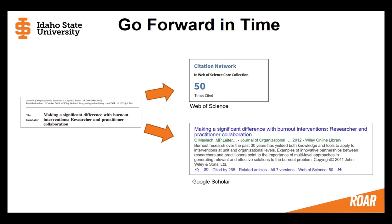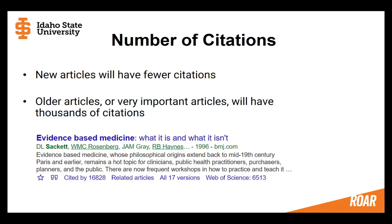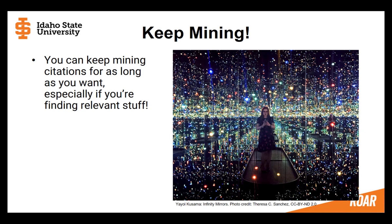If you're starting with a pretty recent article—something published in the last year, for example—this number is going to be pretty low, as others haven't had a chance to cite it in their own work. In contrast, the older and more important to the field an article is, the more likely it is to have a very high number of citations. Check out this 1996 article on evidence-based medicine by Sackett. This famous article is very important to the field of evidence-based medicine, which is why it has been cited so many times. Of course, you can only go so far forward—eventually you are going to come to the present day. But you can go quite far into the past, just depending on your topic and how far you want to go. Just watch out that you don't fall too far into the rabbit hole.